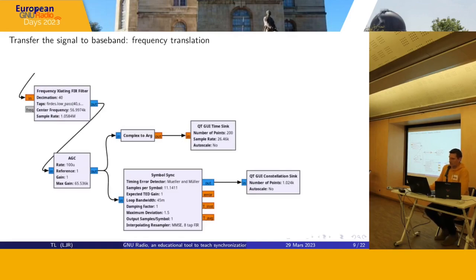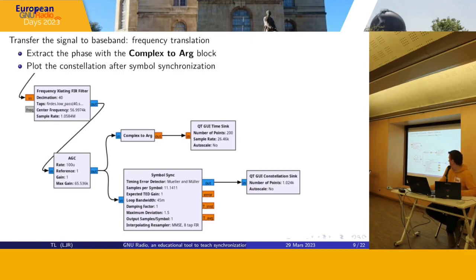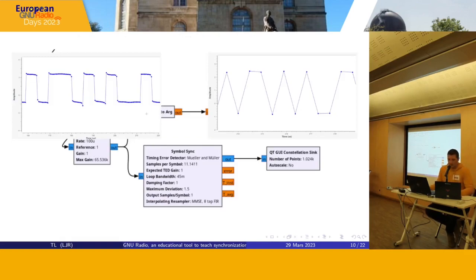Now we can transfer this signal to baseband by doing a frequency translation, and observe the phase variation to show that it contains digital information in Manchester encoding. For that, we use a complex to arc block. We also observe the BPSK constellation using the symbol sync block. In brief, it uses a timing algorithm to return a single sample per symbol, and needs an estimate of the number of samples per symbol — here about 11. You can see the signal at the input of the block with approximately 11 samples per symbol, and the decimated output signal with only one sample per symbol.